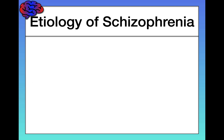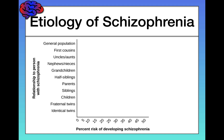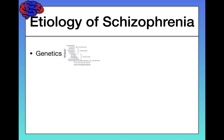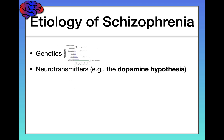Let's end by discussing the etiology — the causes — of schizophrenia. The more genes you share with a person who has schizophrenia, the more likely it is that you'll develop it, suggesting a significant genetic component. There are other biological components as well, such as neurotransmitter differences. The dopamine hypothesis proposes that schizophrenia is caused by an overabundance of dopamine or too many dopamine receptors.